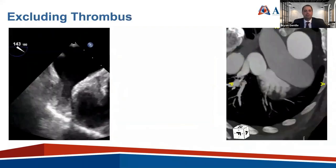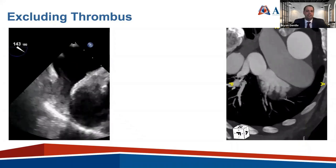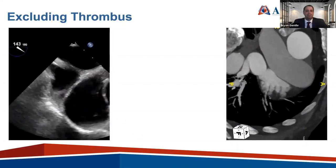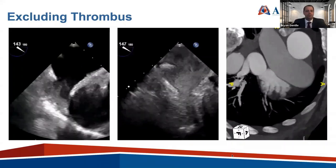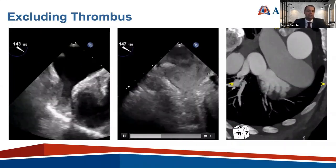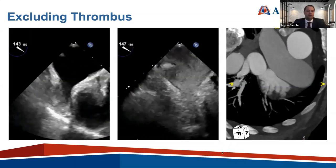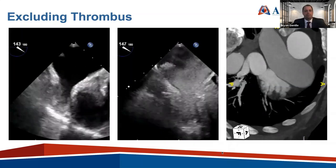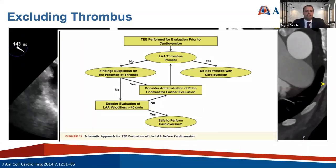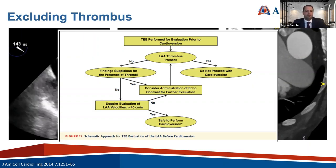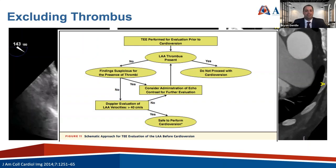In our lab, we use ultrasound enhancing agents to exclude thrombus in these ambiguous cases. The pre-screen CT showed incomplete filling between pectinate. With definitive contrast, it fully opacified the left atrial appendage, getting nicely out between those pectinate — a patient we felt comfortable proceeding with appendage occlusion. The American College of Cardiology supports using echo contrast to clear the appendage. When in doubt, if you cannot exclude thrombus, you should consider using ultrasound enhancing agents.